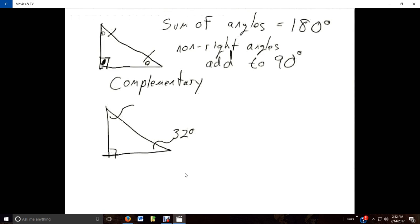Since this angle, the 32 and the unknown add up to 90, we just subtract and we get that our unknown angle must be 58 degrees. I'm getting kind of lazy here with my degrees. We need to make sure we don't do that.